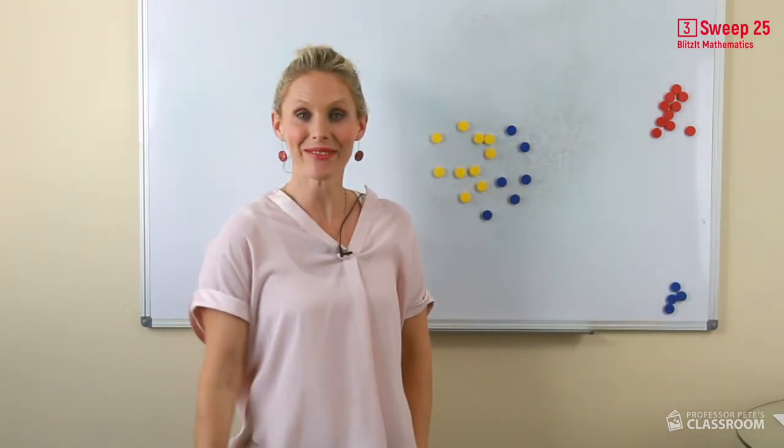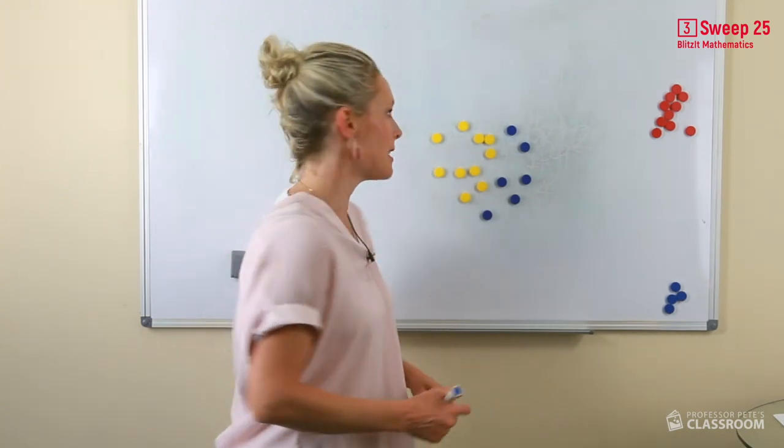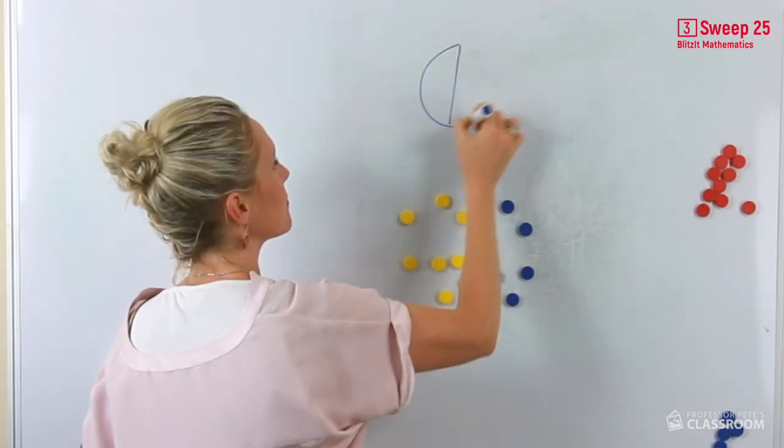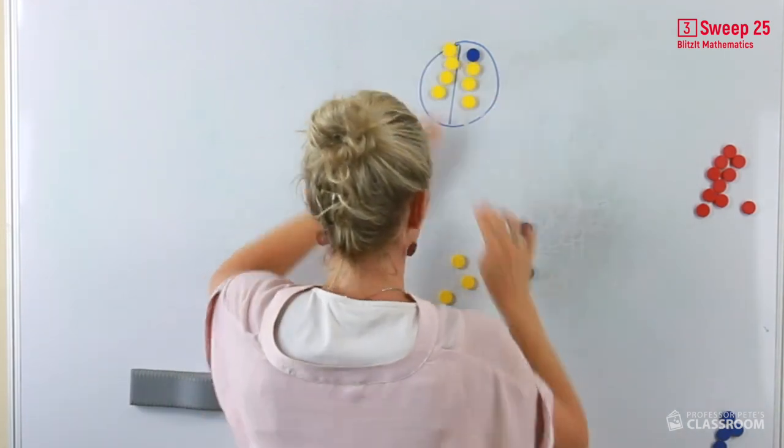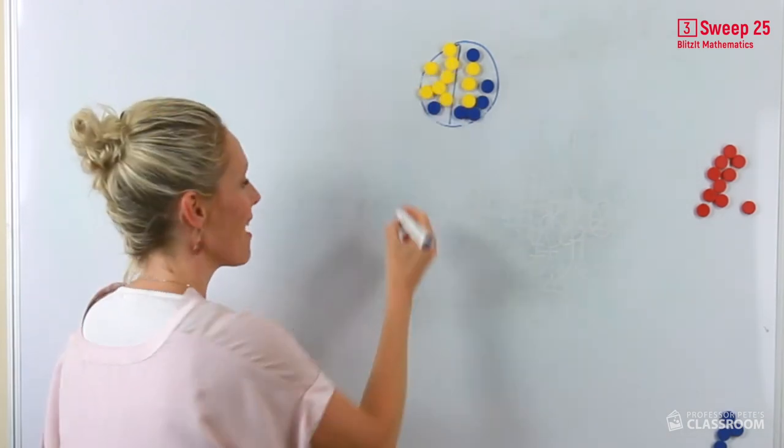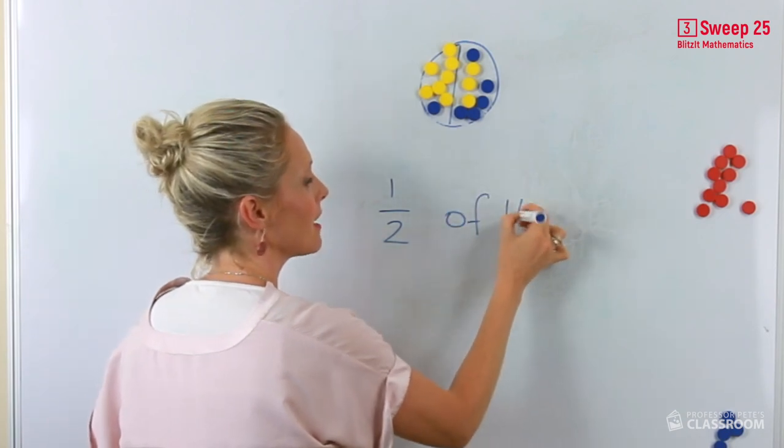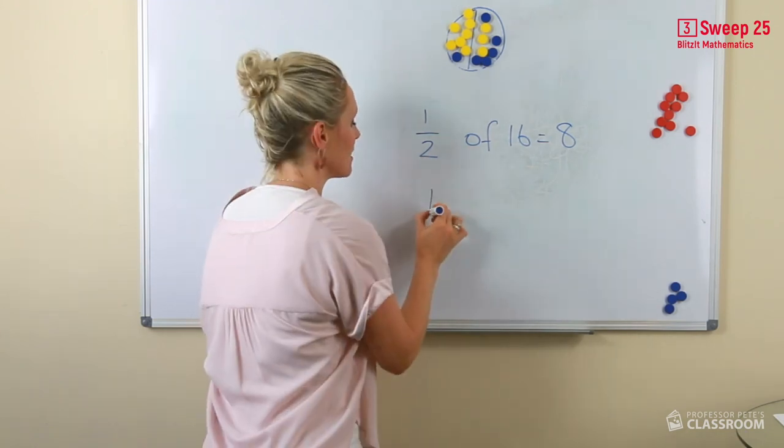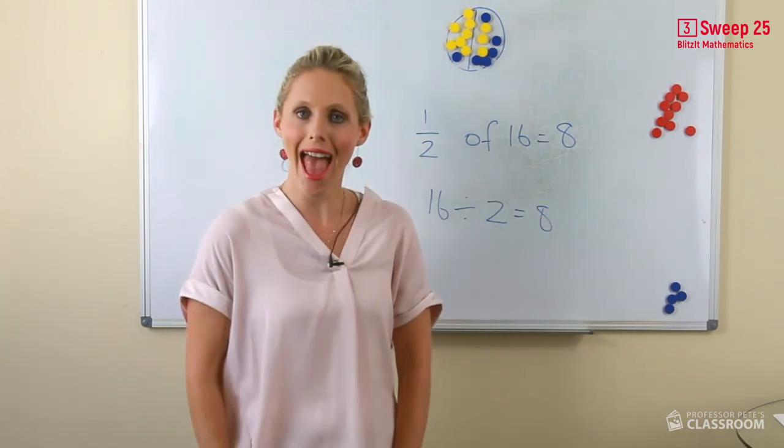Here we have 16 counters. What is half of 16? Well, here's our pie. Let's find out. 2, 4, 6, 8. Half of 16 equals 8. And another way to write this, 16 divided by 2 equals 8.